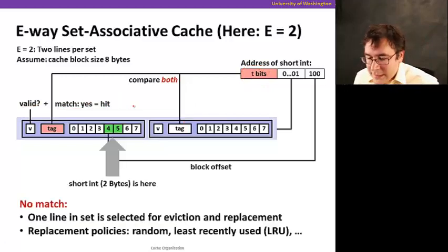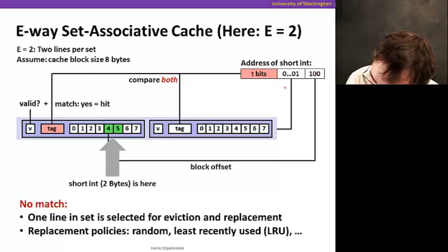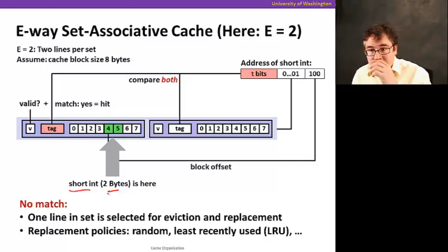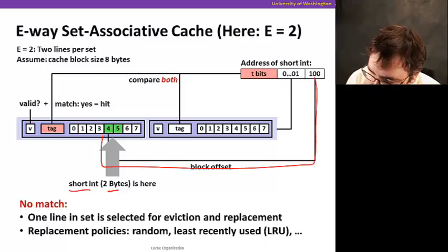Let's say that we determine that this is a hit. Now, the same thing, we're going to get the data. We happen to do a 2-byte, we do short int, reading only 2 bytes. That's where the offset starts. We're going to get these 2 bytes here, read it and send it to the processor.